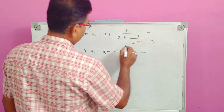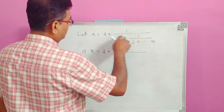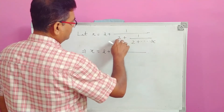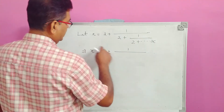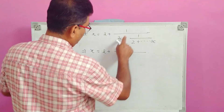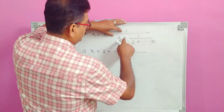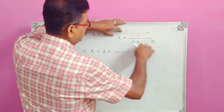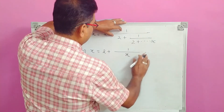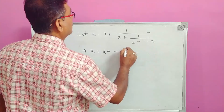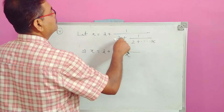This becomes 2 plus 1 over 2, and then with x. Working with 1 over 2, we learn another form: 1 or 4. So 2 plus 1 over 2, and then we write x plus that. We cannot simplify further, so we work with 2 plus 1 over 2.